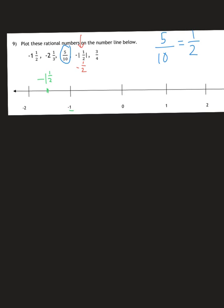Next, we have negative 2 and 1 third. Find negative 2, and then we need to go a third of the way to negative 3, kind of all the way on the left-hand side. Negative 2 and 1 third.